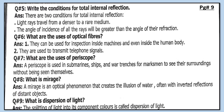Optical fibers are also used to transmit telephone signals. They are used in periscopes so that people can see their surroundings without being seen themselves. Question 8: What is a mirage? A mirage is an optical phenomenon that creates the illusion of water, often with an inverted reflection of distant objects. Question 9: What is dispersion of light? The splitting of light into its component colors is called dispersion of light.